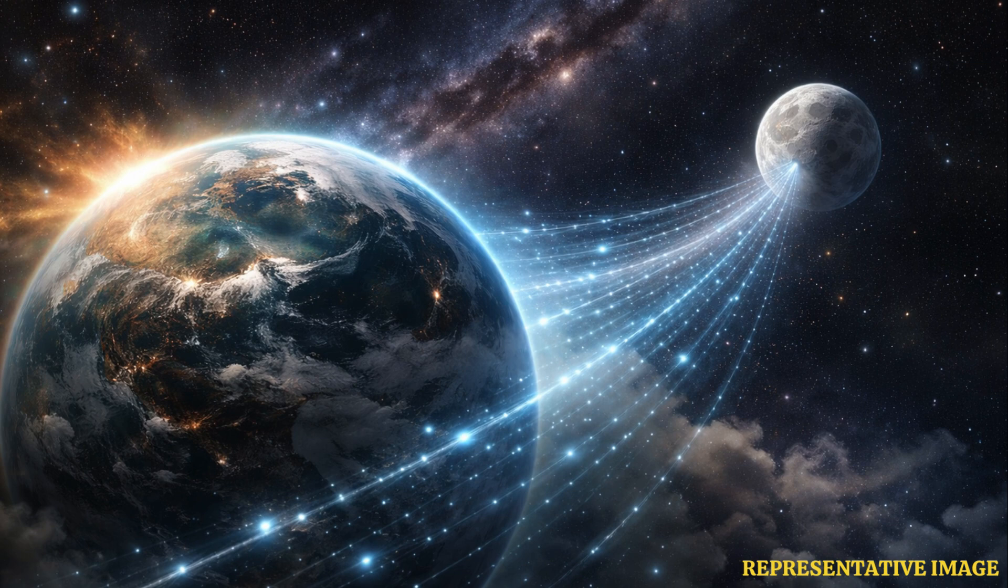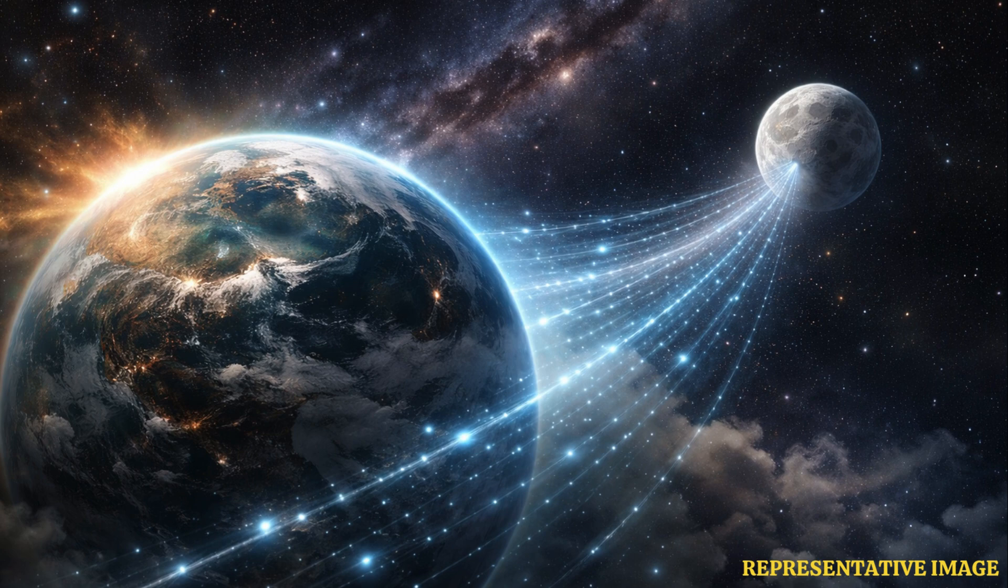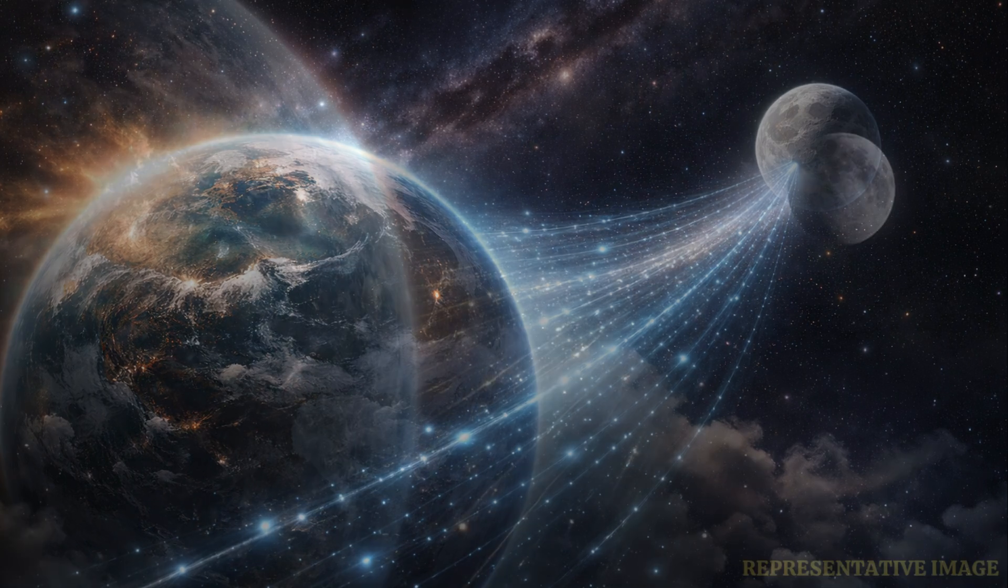Earth's magnetic field started forming around 3.7 billion years ago, which means that instead of before its creation, this movement of particles from the planet to the Moon started after it was formed.